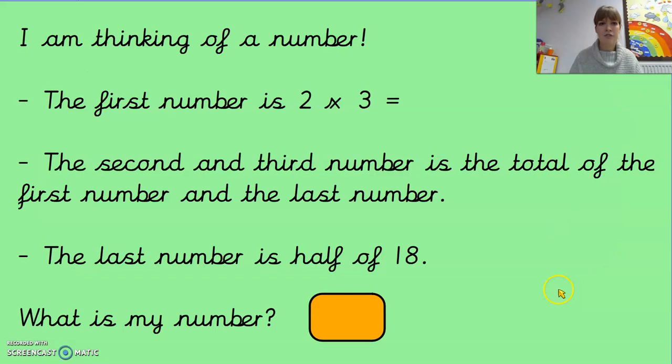So this is the first one. I am thinking of a number. The first number is two times three. The second and third number is the total of the first number and the last number. The last number is half of 18. What is my number? So there's a lot of things to do there. So let's start with the first one.